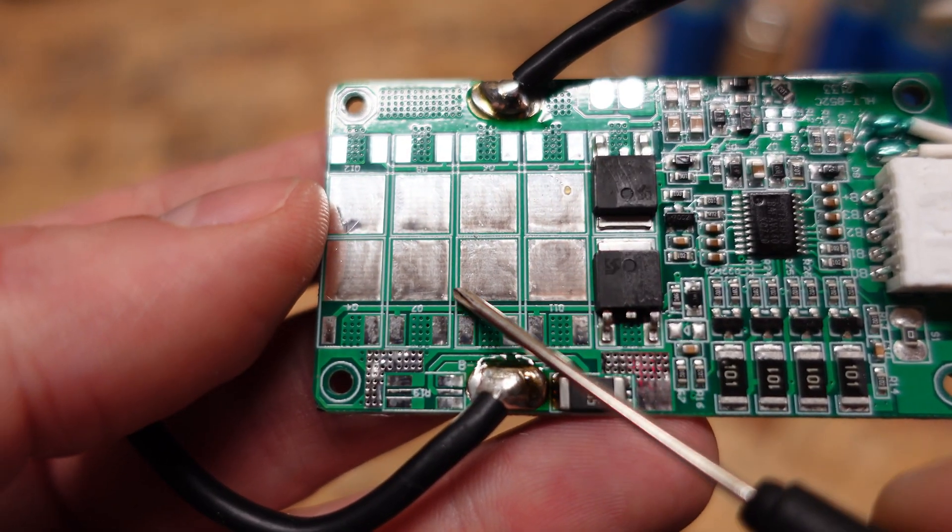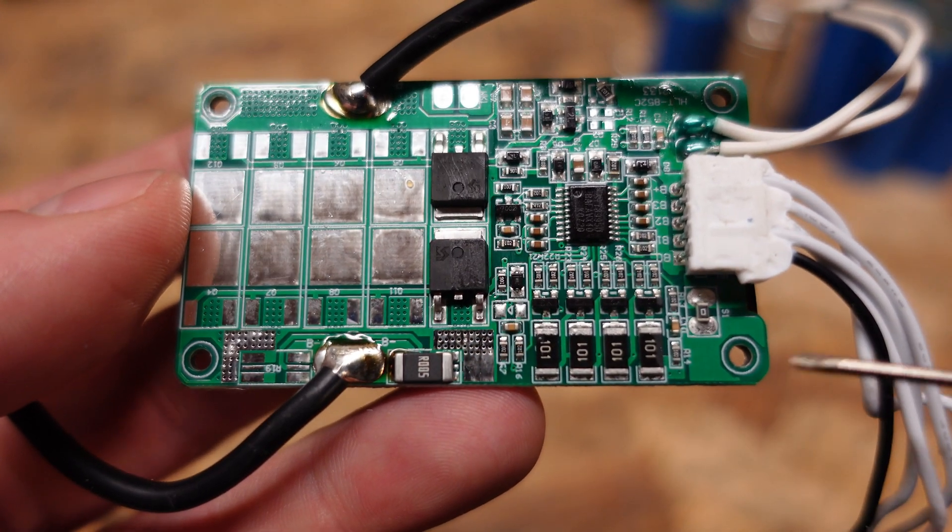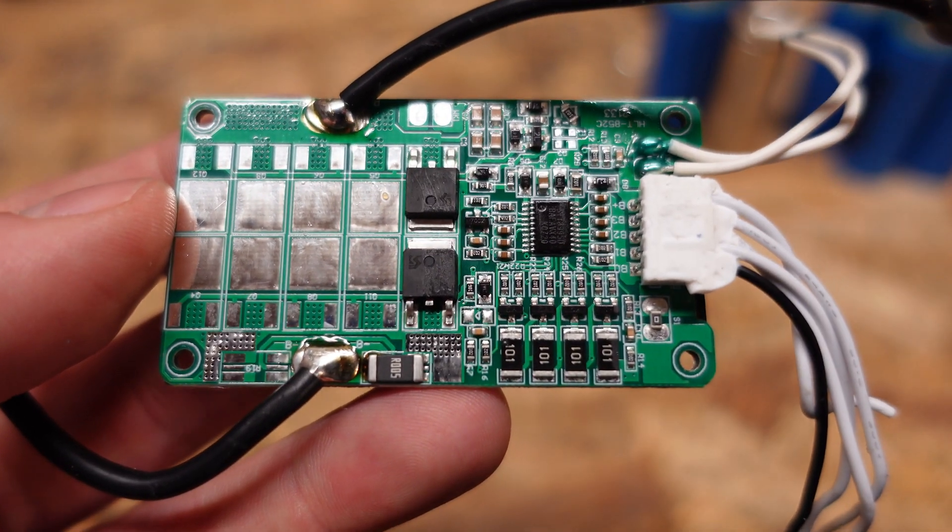And you can see all these empty pads they have left here. So if they wanted to build this BMS with a greater current capacity all they need to do is solder on a few more transistors there.